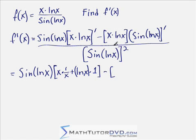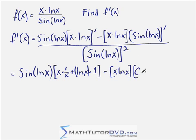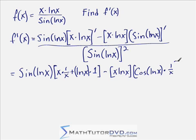Minus — the next term, x times natural log of x, nothing happens to it. Now in this last bracket we have the sine of natural log of x, so you have a chain rule going on. The derivative of sine, because that's the outermost function, is cosine. So I'm going to have cosine of natural log of x, and then I need to multiply by the derivative of the inside of this function. The derivative of natural log is 1 over x. Close the bracket and I'm done with the numerator.